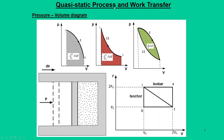In a quasi-static process, work is force times displacement. Force can be interpreted as pressure and displacement as volume change. So quasi-static processes are often represented in pressure-volume (PV) diagrams, where we can define the work done as the integral of P dV.